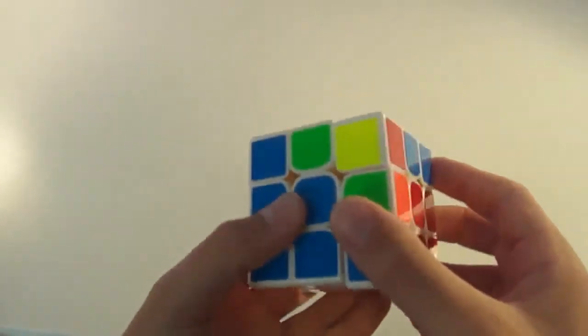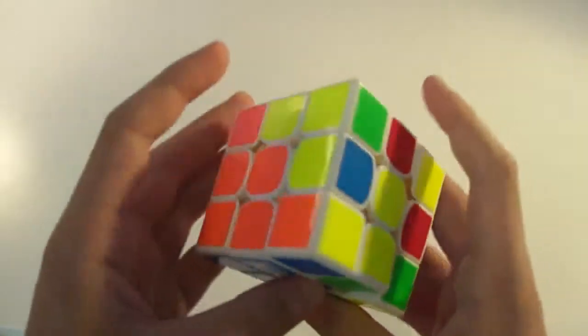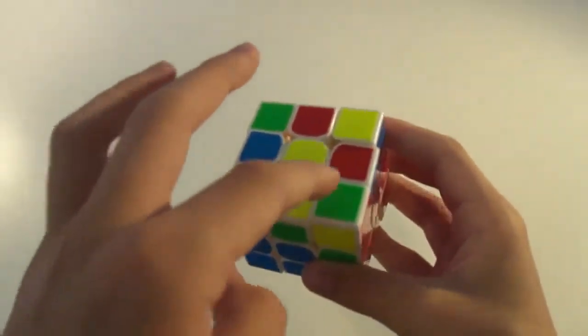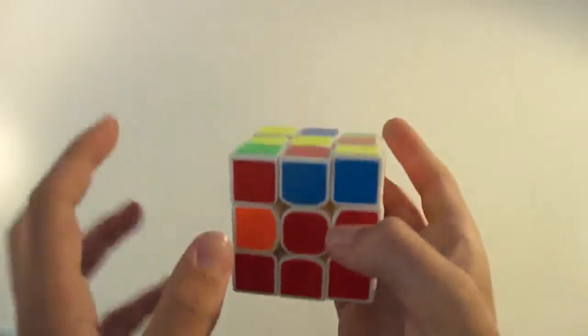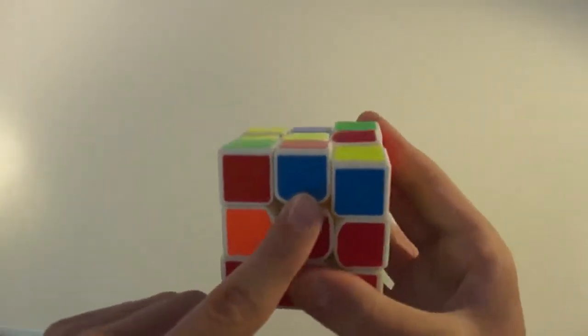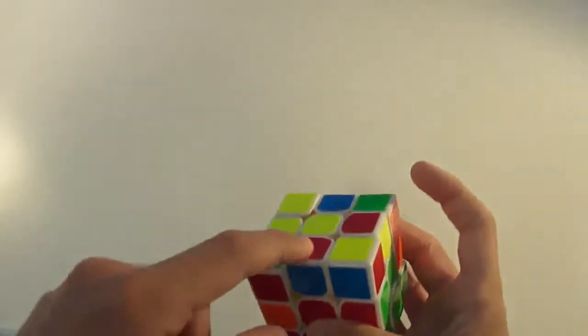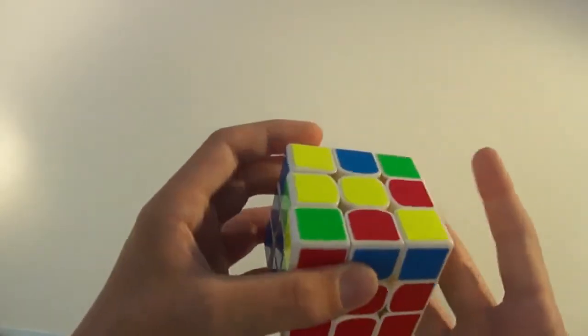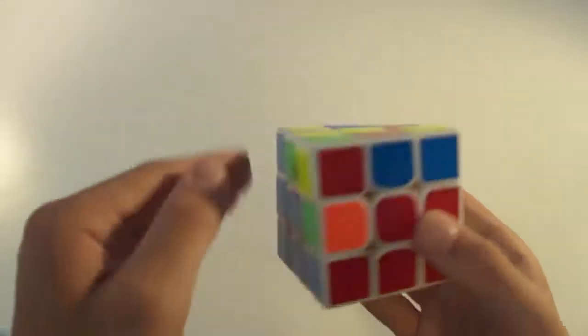So, what you want to do now is find the middle layer edge. You first want to look on the top layer, at those four edges. I found the blue and red one. And the way you know if it's a middle layer edge is if it doesn't have yellow on it.